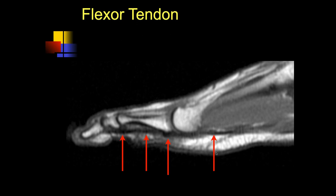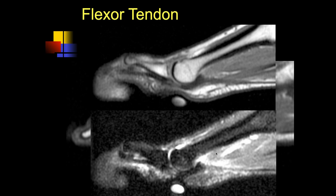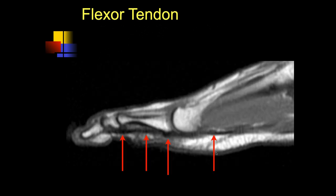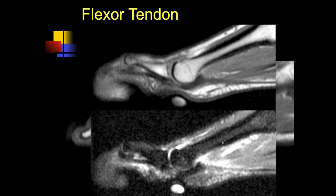This is a patient who had pain on the plantar aspect of the first digit. Looking at the flexor tendon, there's increased signal at the skin marker and there might be a plantar plate injury. This actually was a tear — you can see a little proximal retraction. The plantar plate was torn here and retracted back a little bit.